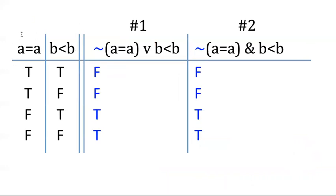What I did is I put A equals A over here, and B is less than B here. So I tried to preserve some sort of alphabetical order. And I negated the A equals A part for both of them, because that's the innermost connective. The only way these sentences differ, actually, is in their main connective. So there's the two truth functions that I got.